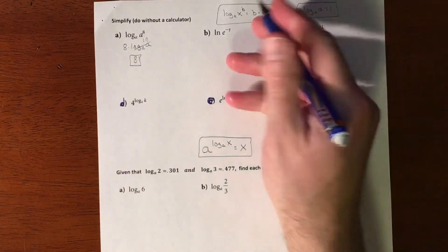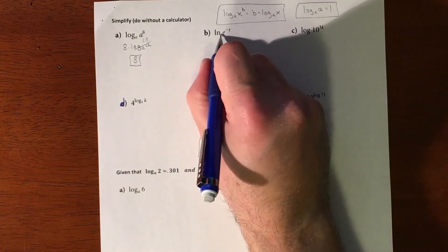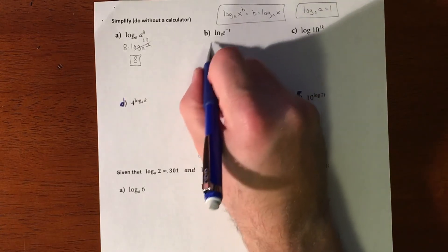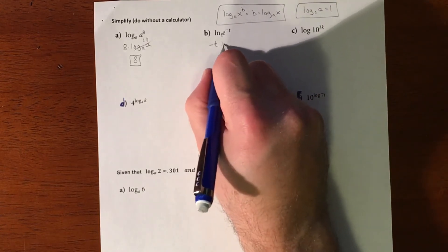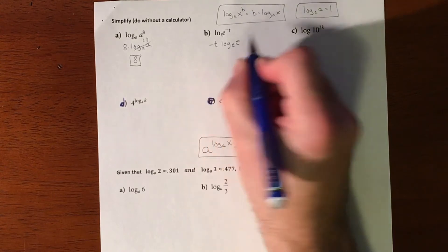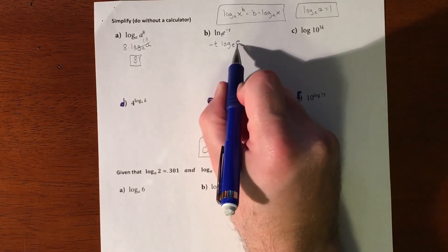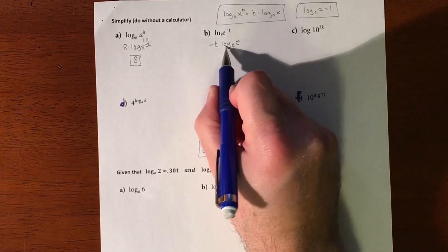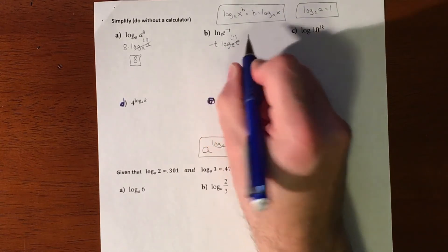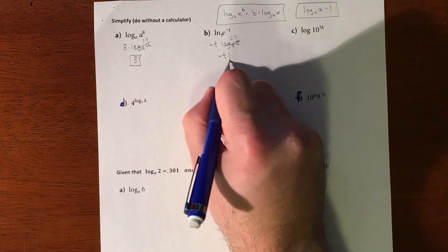Here, don't forget that a natural log is a base e. So we pull the negative t off, and it's really if you even want to rewrite it like that, the natural log of e. The natural log is log base e of e, so those go away and those are a one, so you got negative t.